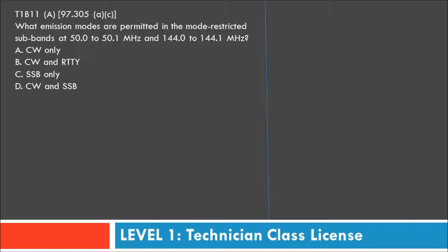What emission modes are permitted in the mode-restricted sub-bands at 50 to 50.1 MHz and 144 to 144.1 MHz? Your potential answers are A, CW only; B, CW and RTTY; C, SSB (single sideband) only; or D, CW and single sideband.